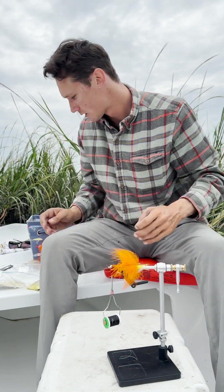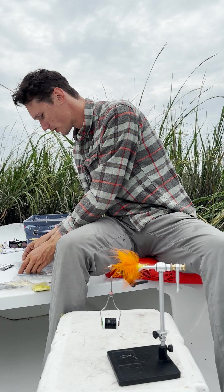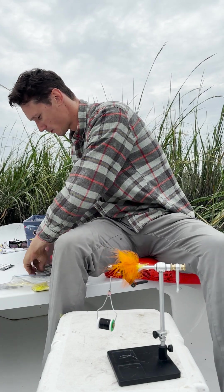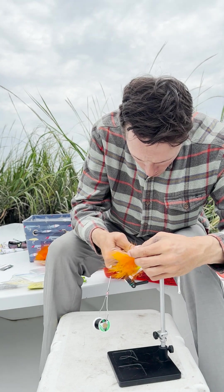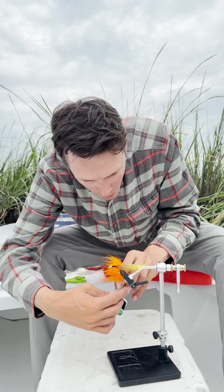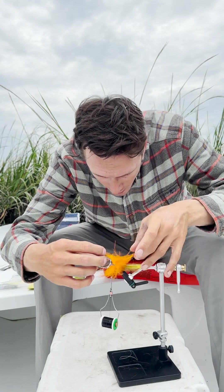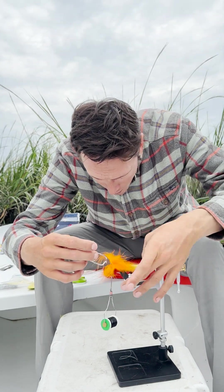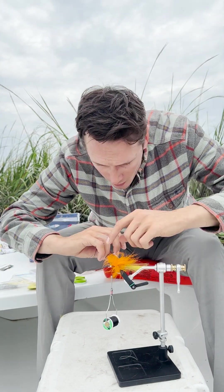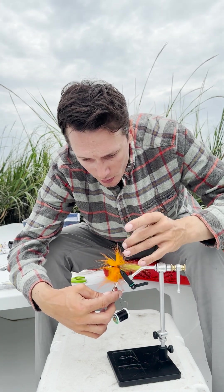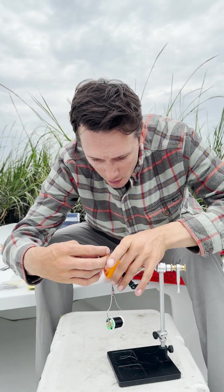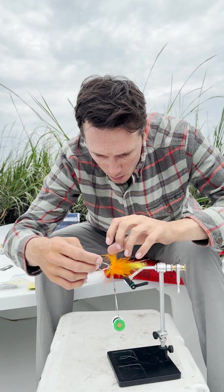All right, then hackle pliers up for this part. Just get that marabou plume and spin it around there nice, while trying to smooth, slick the fibers back a bit and not get them all twisted and tangled. You can fix this a little bit later with your whip finishing tool.